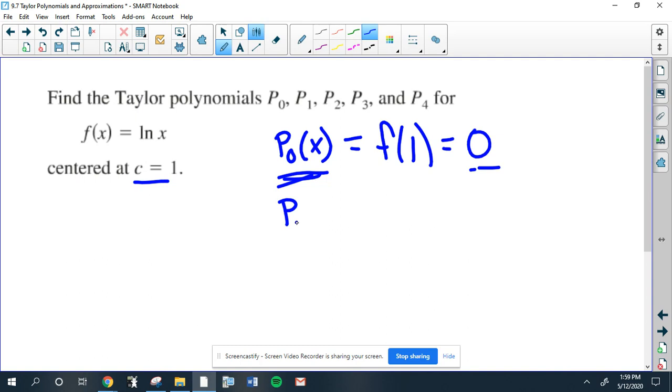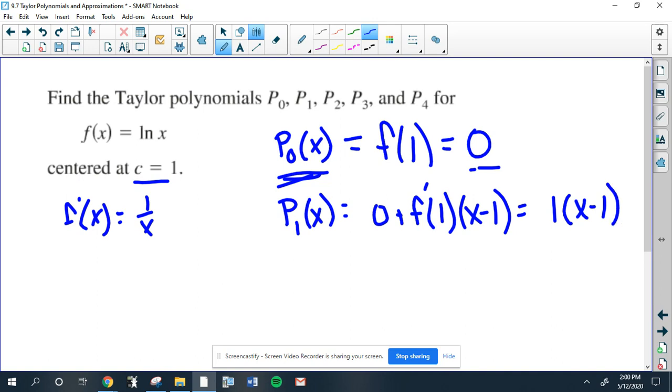So the second one is whatever was before it - remember it's f(1) plus now it's f'(C), sorry f'(C) because this is the first degree, times (X - C). f'(1): f' of that is 1/X, so f'(1) is 1. So this would just be 1 times (X - 1). It's just the line X - 1.